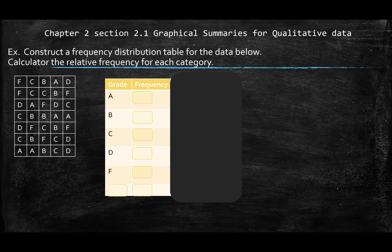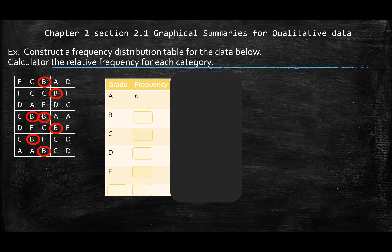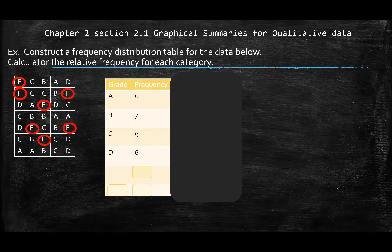Now, all you do is go into your raw data and tally up how many A's you have. I can see there are 6 A's. So my frequency — how often does A appear — is 6. Then you tally your B's, which is 7. You do this for every category: C is 9, D is 6, and F is 7.